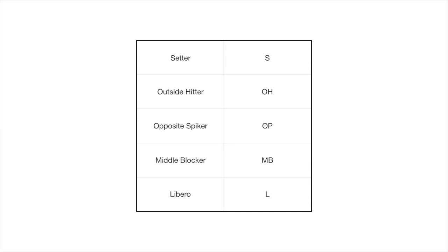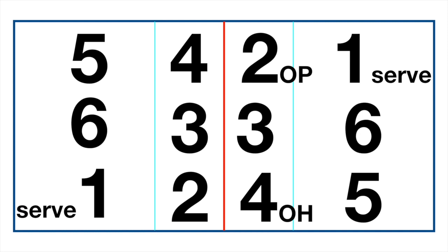This is a basic rotation and the position layout of a volleyball court. You can see bottom right is position one. Positions are numbered counterclockwise: two, three, four, five, and six. But players rotate clockwise, which means the player on position two will move to position one in the next rotation. Whoever is on position one will serve.